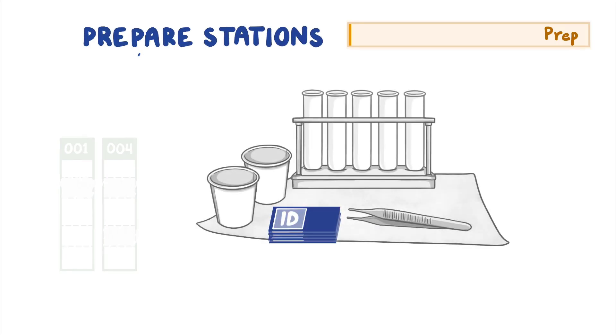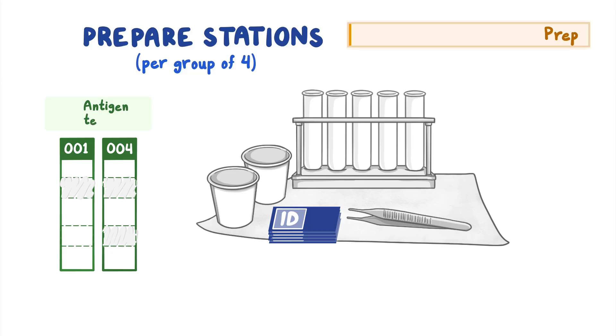Before the activity, you will need to prepare a testing station for each group of four students. Start by preparing the class set of 32 antigen test strips and 32 test tubes or cups. Then you will divide the 32 test strips equally among the stations. Each station will also include the matching test subject identification cards, forceps or tweezers, and paper towels.